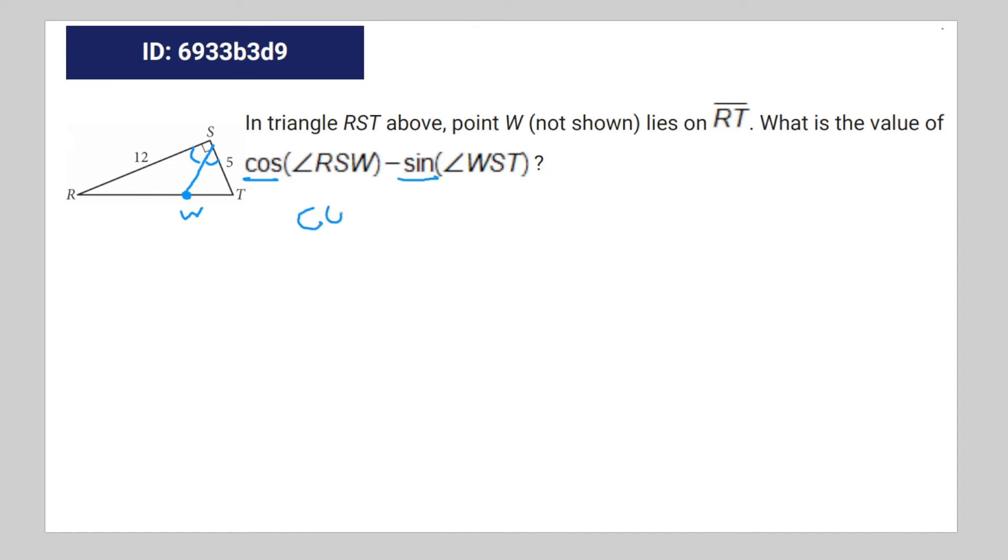Therefore, cosine of RSW is equal to sine of WST. Therefore, to minus them from each other would be like minusing one from one, which gives you zero.